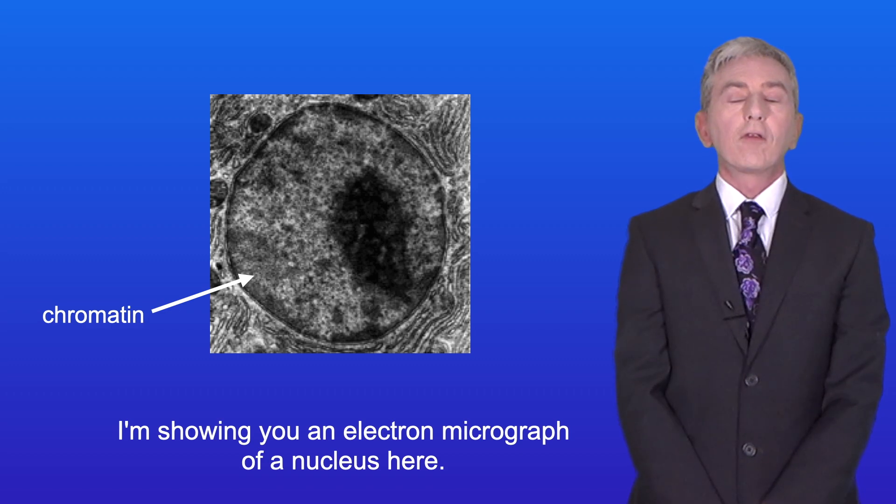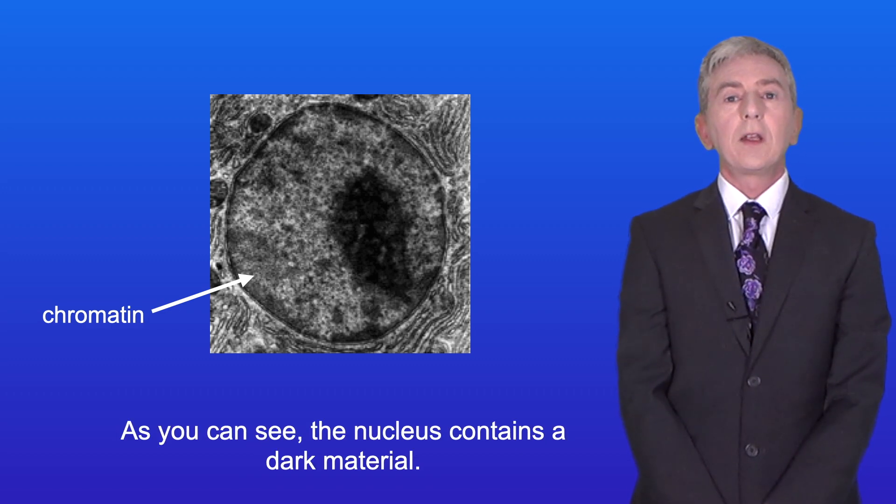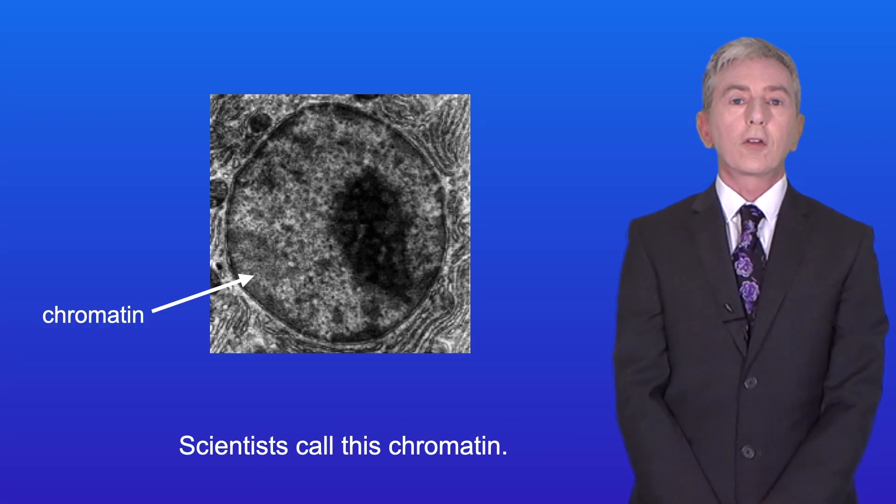I'm showing you an electron micrograph of a nucleus here. As you can see the nucleus contains a dark material. Scientists call this chromatin.